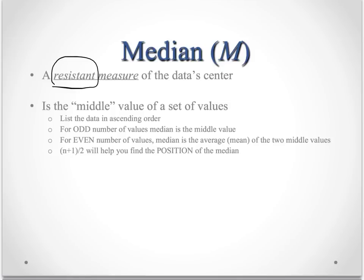So a really helpful way to help you find where the median is, what the position is of the median, is to take the number of values that you have, add 1 and divide by 2. That will help you find the position where you would find that median value.